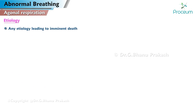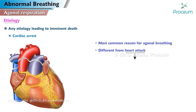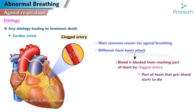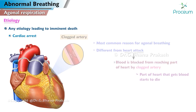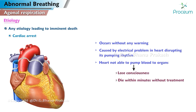Etiology: Any etiology leading to imminent death can cause agonal breathing. Cardiac arrest is the most common reason. It is different from a heart attack, although they can be related. A heart attack happens when blood is blocked from reaching part of the heart by a clogged artery, and that part of the heart starts to die. Cardiac arrest typically occurs without any warning and is caused by an electrical problem in the heart which disrupts its pumping rhythm, causing loss of consciousness.